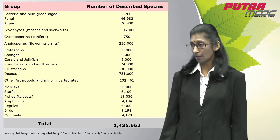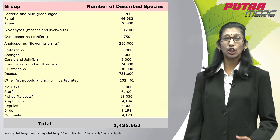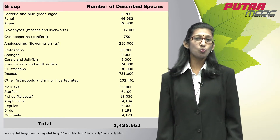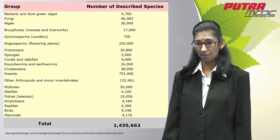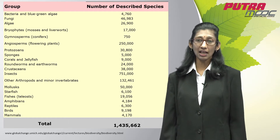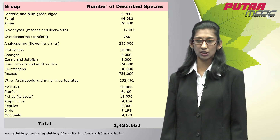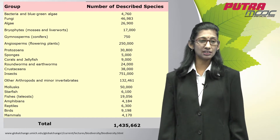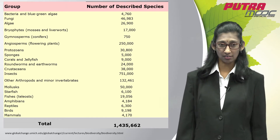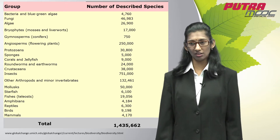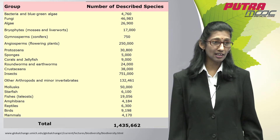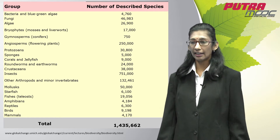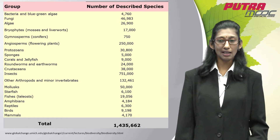Look at the table displayed on screen. It shows groups of living organisms and the number of species that have been described. Picking on one or two large and important groups: angiosperms, or flowering plants, have 250,000 described species. Insects constitute the largest described species group with 751,000. There are more than 19,000 described fish species, and many other groups such as bacteria, fungi, protozoa, invertebrates, and reptiles, whose numbers you can see on the screen.